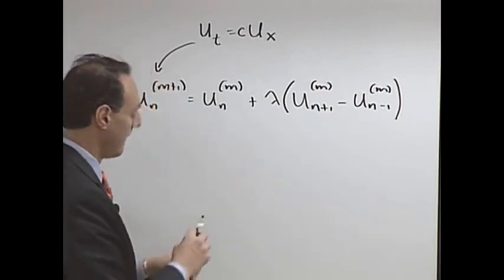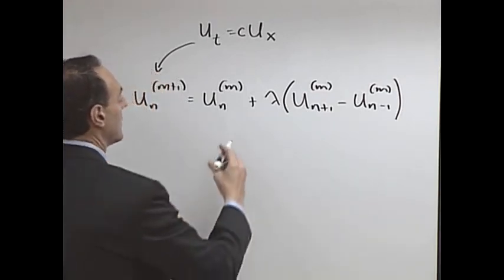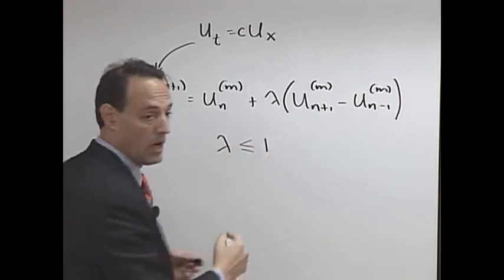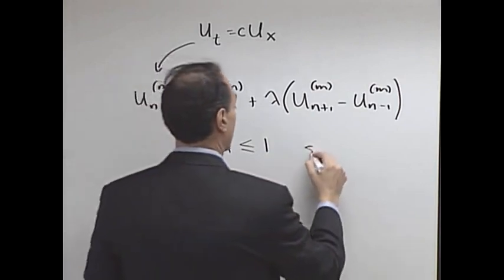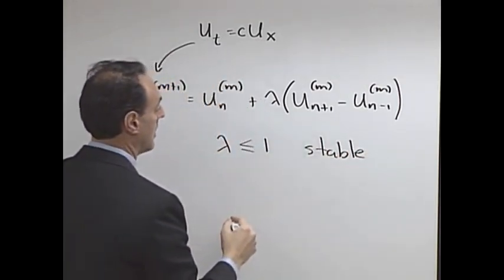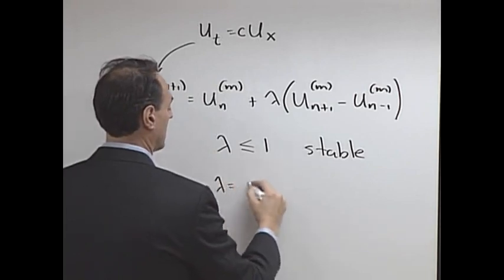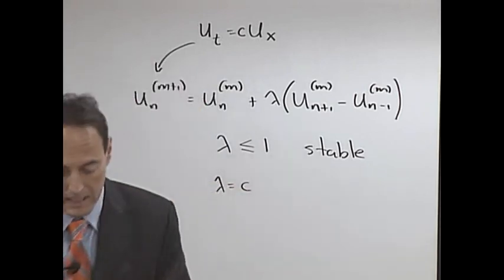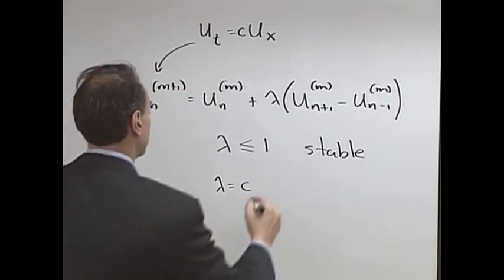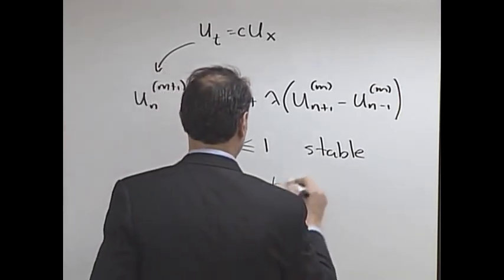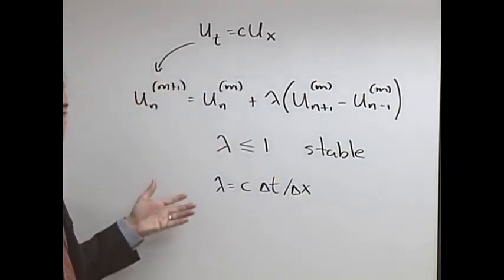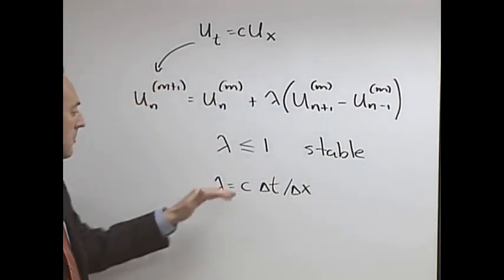So what we learned from this was that if lambda is less than or equal to one, this scheme was stable. And by the way, lambda itself is c delta t over delta x.